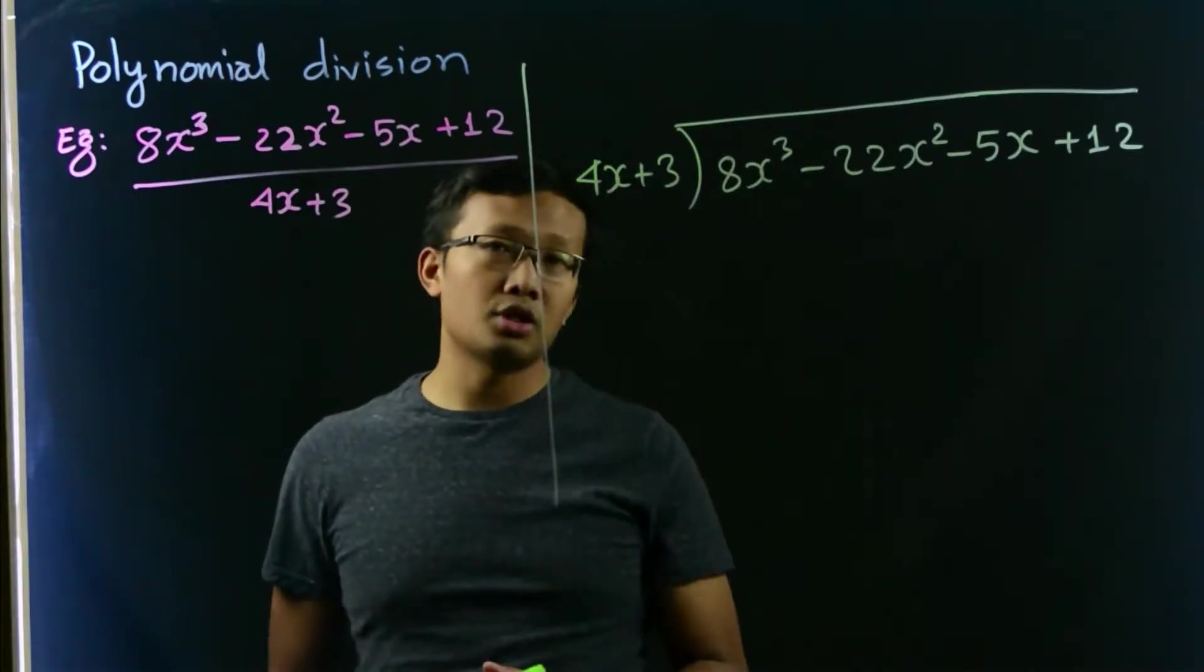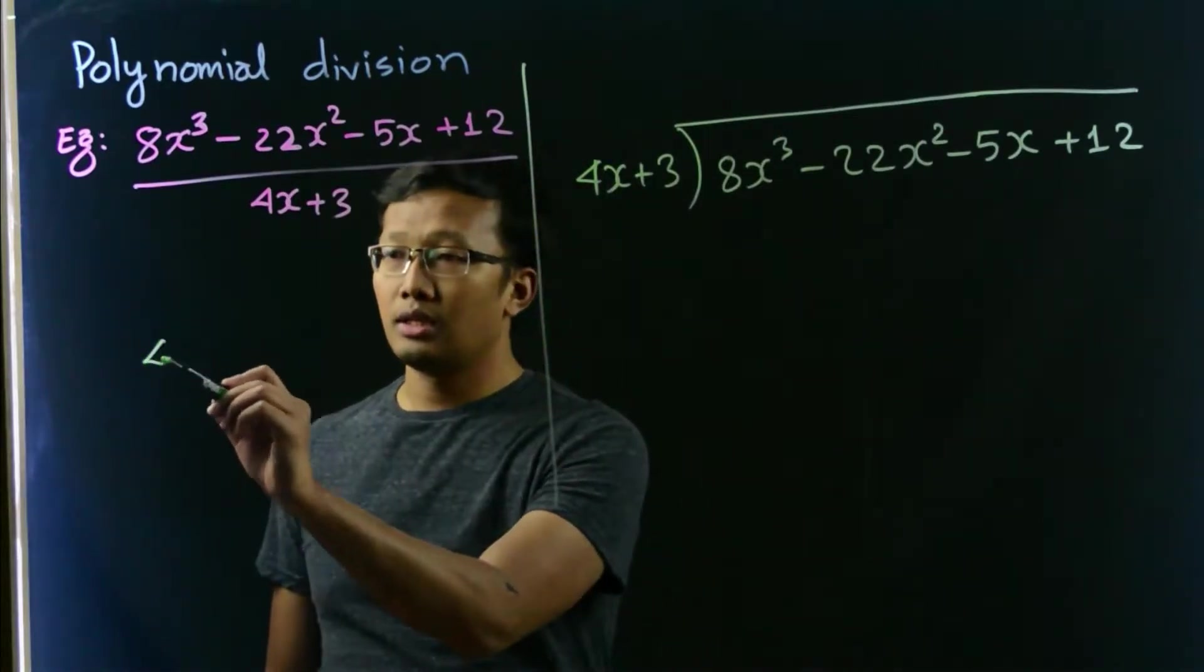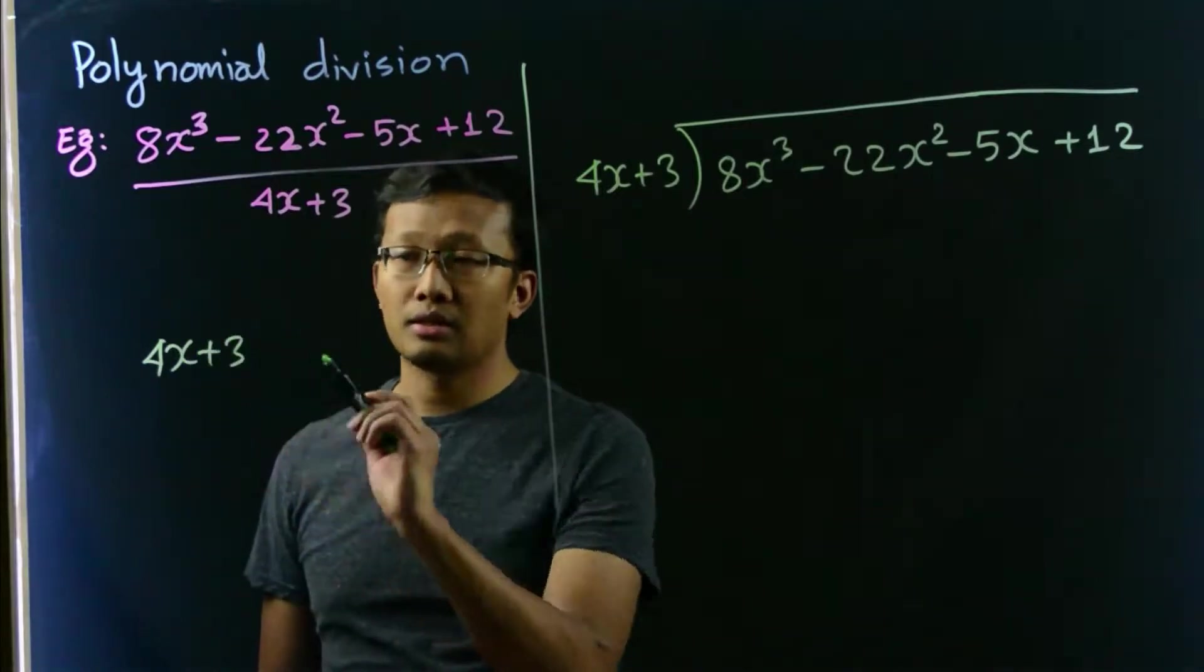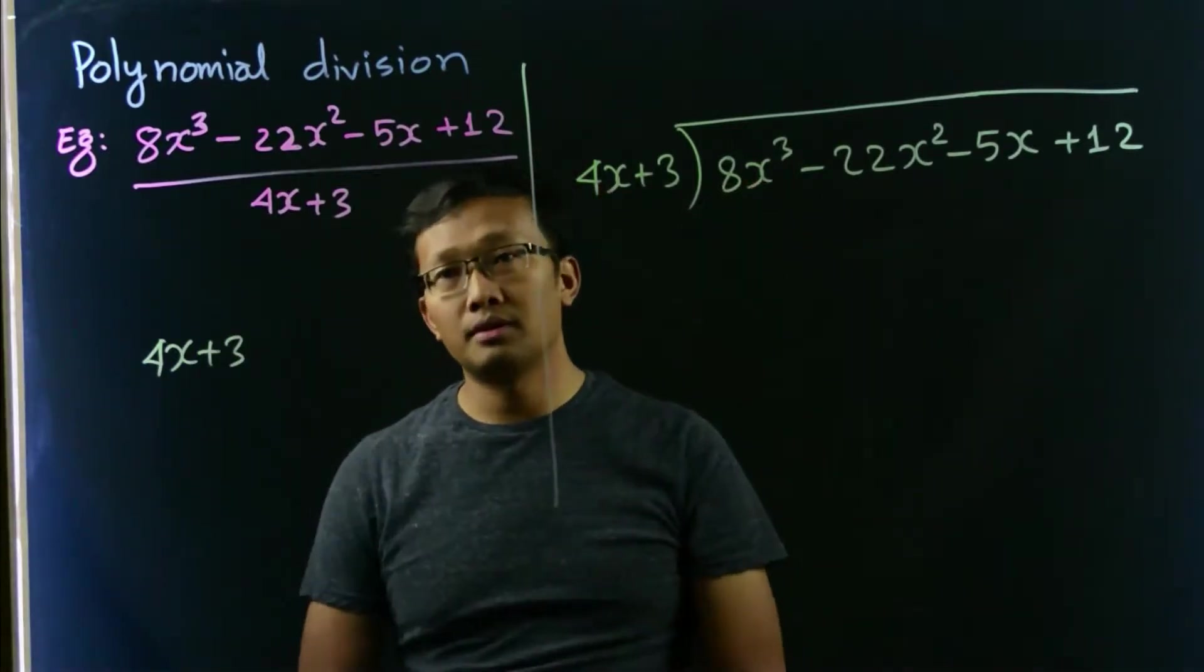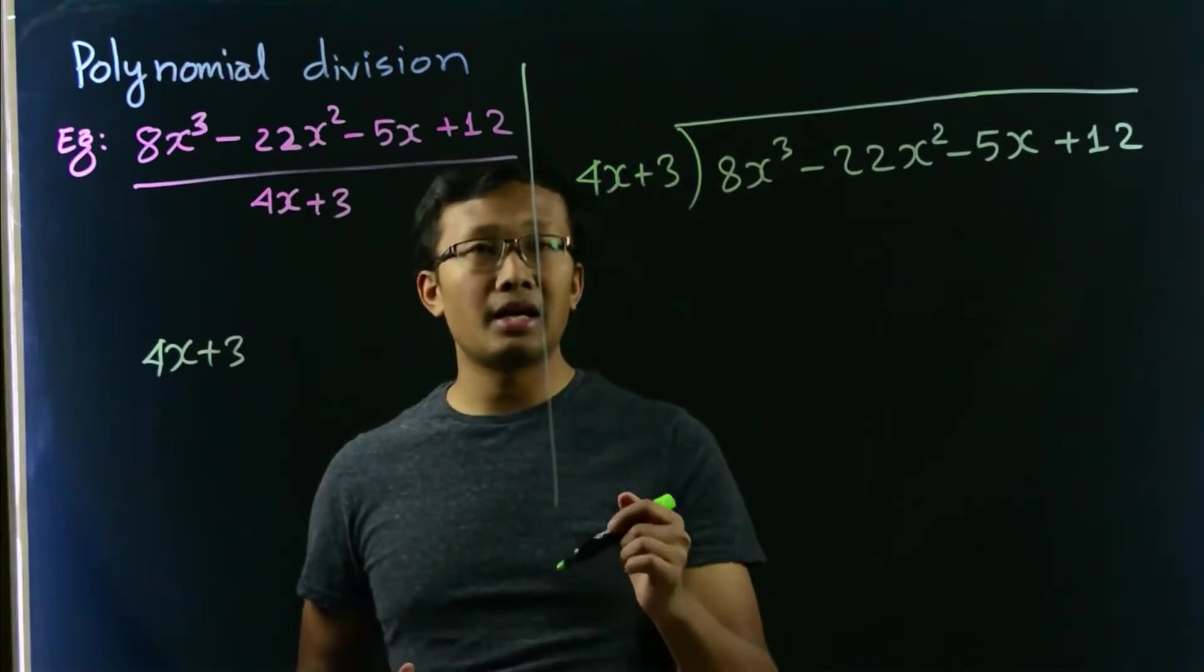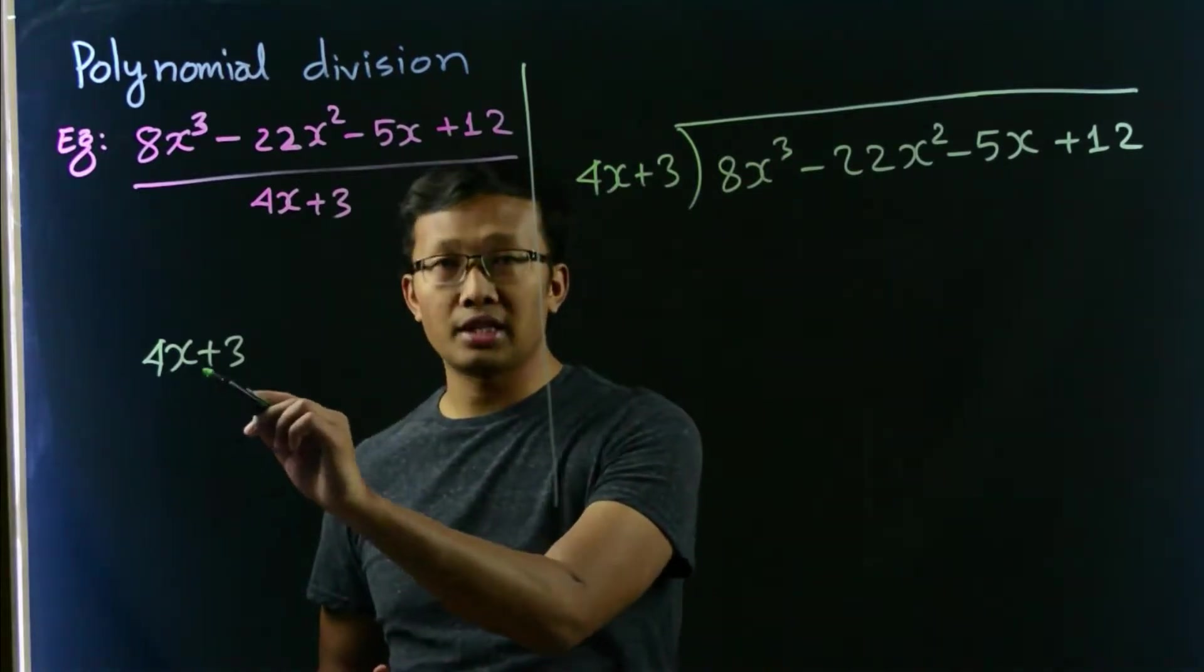Let us do some scratch work, which is 4x plus 3. We want to get rid of 8x cubed, so let us multiply this expression, 4x plus 3.